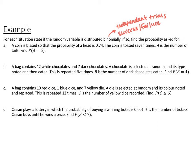A is distributed binomially with 7 trials. Since we want tails, the probability of success is 1 minus 0.74 = 0.26. Using binomial PDF on your graphing calculator — since we're looking for one specific value — the probability that A equals 5 is 0.0137.